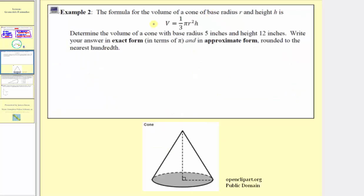In example two, we're told the formula for the volume of a cone of base radius r and height h is given by v equals one-third pi r squared h. A cone is pictured below. This length here would be the height, and this length here would be the base radius. We're asked to determine the volume of a cone with a base radius of five inches and a height of twelve inches. Because we're determining volume, we measure volume in cubic units, so our volume is going to be in cubic inches. We're asked to write the exact form in terms of pi and also an approximate form to the nearest hundredth.